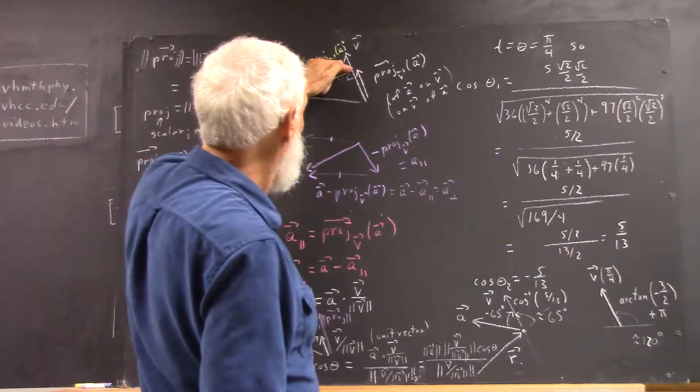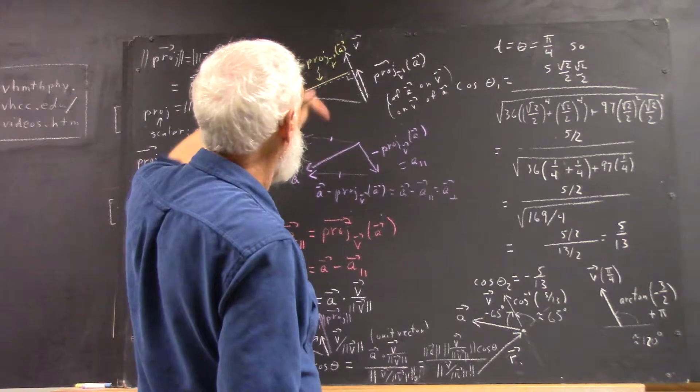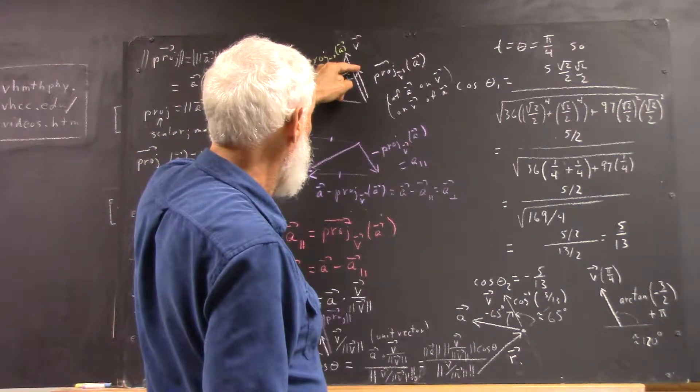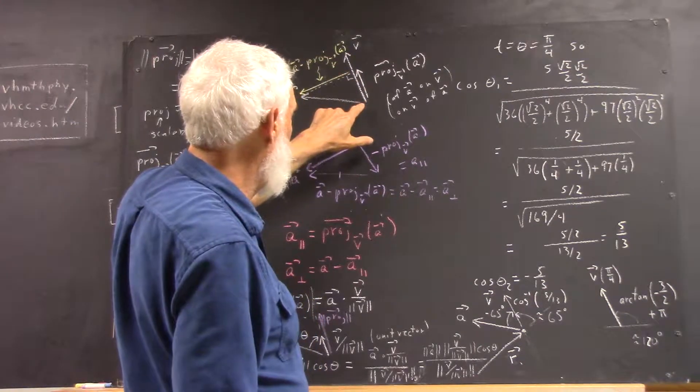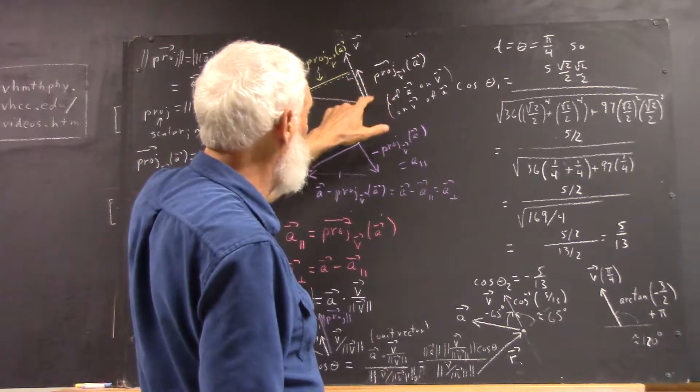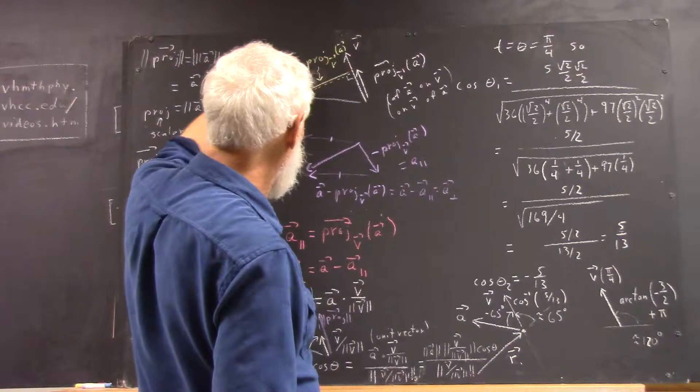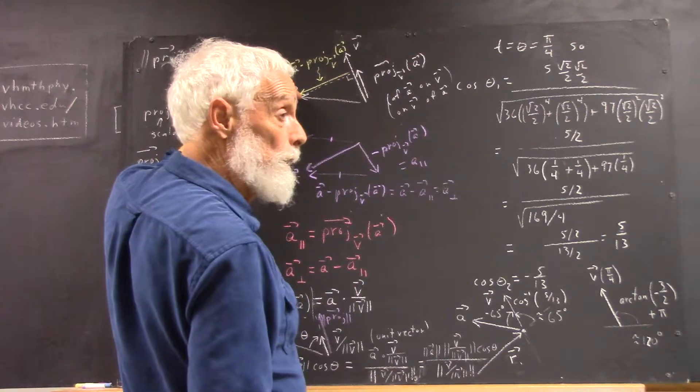Then, you also have this component of the A vector. Because these components of the A vector, if this is one component, then if this component is at the same initial point, if this projection vector and A share the same initial point, then from the terminal point of the projection out to the terminal point of A, it's going to be perpendicular.